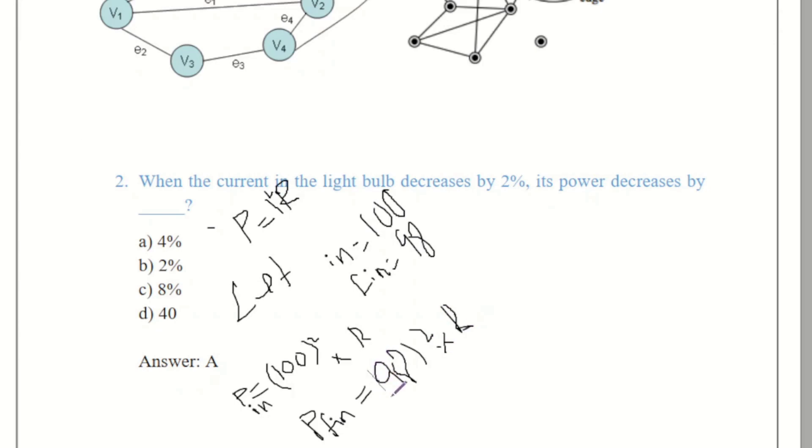So we have to put these values by taking formula for the difference and decreasing of the power that is equals to P initial minus P final. And that is divided by P initial. We have to put these values. So let's suppose 100 multiply by R minus 98 multiply by R divided by the initial value that is obviously 100 multiply by R.